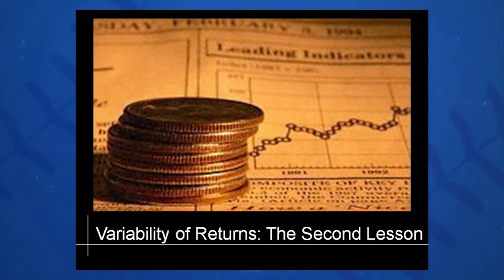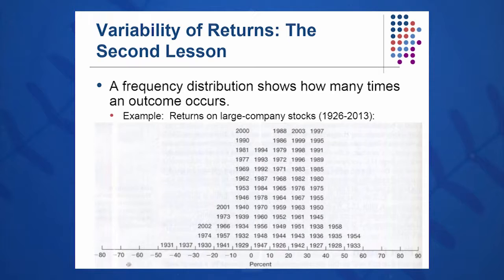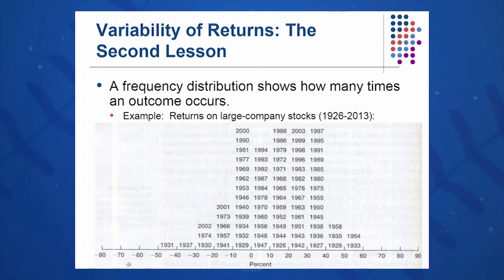Some of these returns and some of these financial instruments — can we use statistics to make good financial decisions? Very simply, we can put all of these returns that Ibbotson and Sinkfeld have gathered from 1926 to 2013 into what I'll call a frequency distribution.